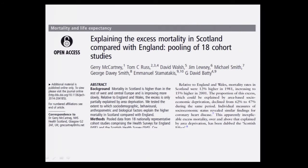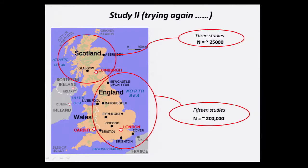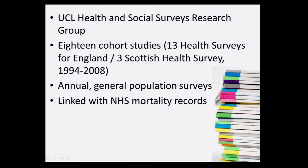In our next project, we tried to emulate that scale to look at the differences between Scotland and England in terms of mortality. This was done using a collection of studies that gathered data throughout Scotland and England — in Scotland, three studies totalling 25,000 people, and in England, 15 studies totalling 200,000 people. These are the health surveys for England and the Scottish health surveys. A group at UCL, where I'm based, has been responsible for many years for taking these snapshots of health in the Scottish and English populations.